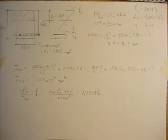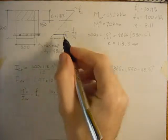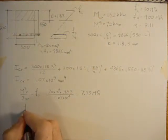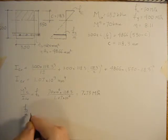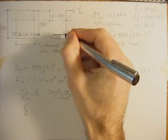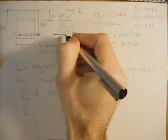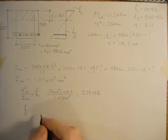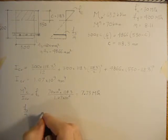And we can work out the stress in the steel over N by using similar triangles. So FS over N is to this distance, which is 550 minus 118.3, which is 431.7.